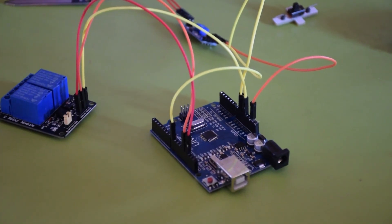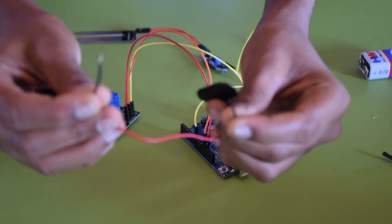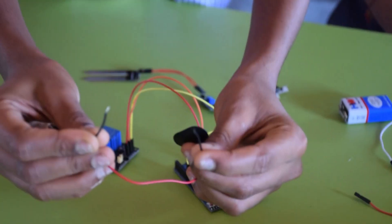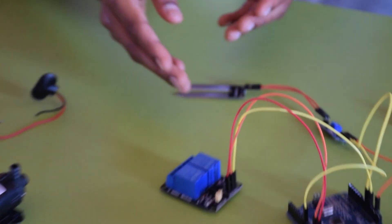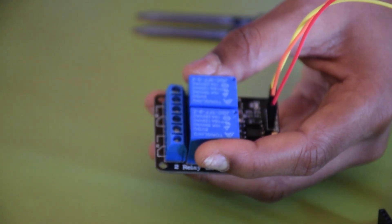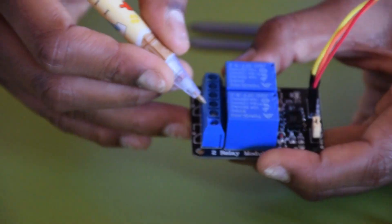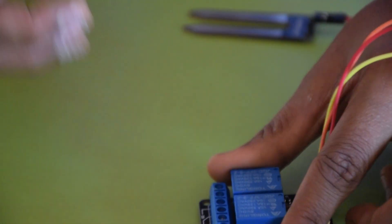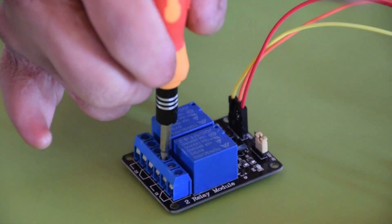Next, we are going to split the connector like this so that it can be connected with the relay. Next, we take one wire so that we can connect it to the normally open and common port. We take one wire and connect it to the normally open.